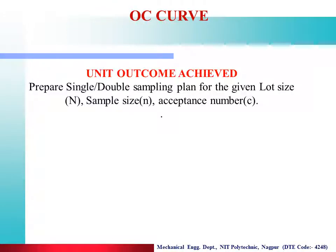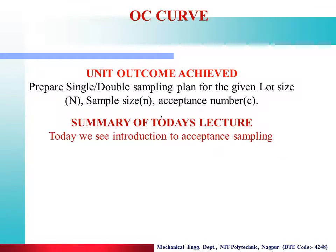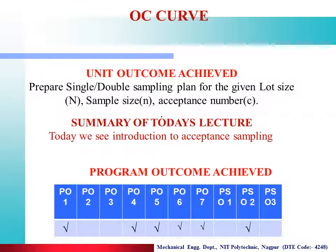The unit outcomes achieved in today's lecture: prepare a single and double sampling plan for the given lot size, sample size, and acceptance number. Summary of today's lecture: we covered Introduction to Acceptance Sampling. Programme Outcomes achieved are PO1, PO4, PO5, PO6, PO7, and Programme Specific Outcome is PSO2.